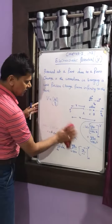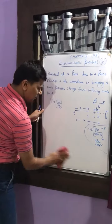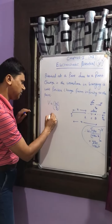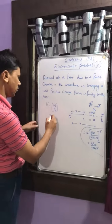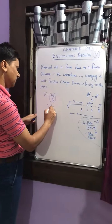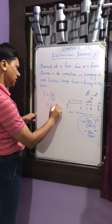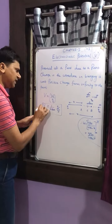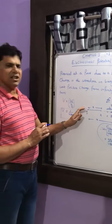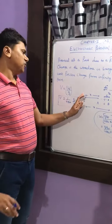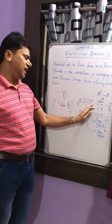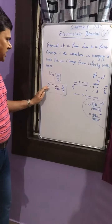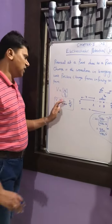To calculate potential, the formula is V = W by q₀. Substituting, this becomes 1 by 4πε₀ times q by r. So the final formula is: if we have a charge q and we need to find the potential at a point A which is at a distance r from the charge q, then V = q by 4πε₀r.